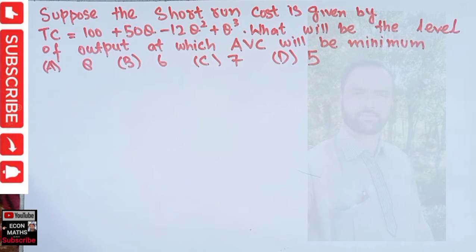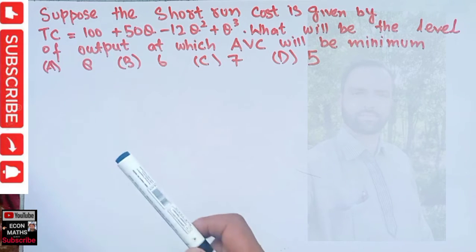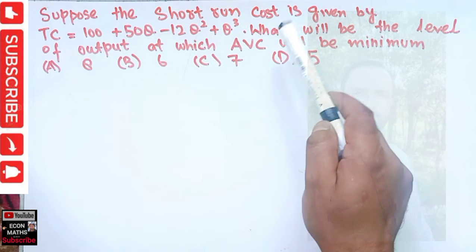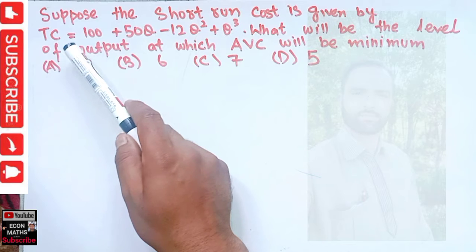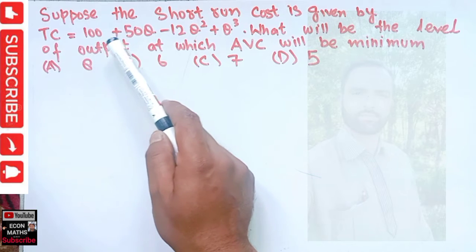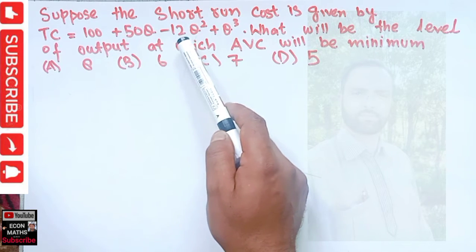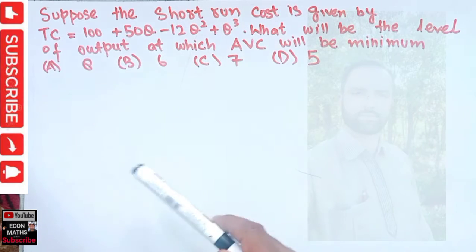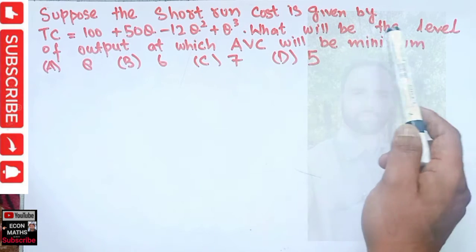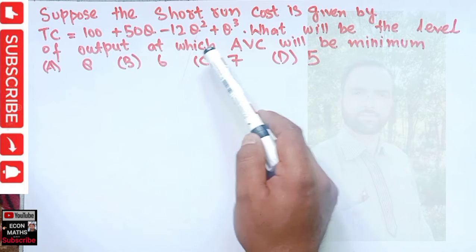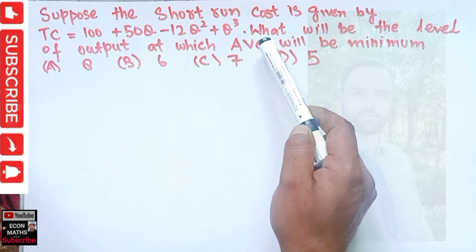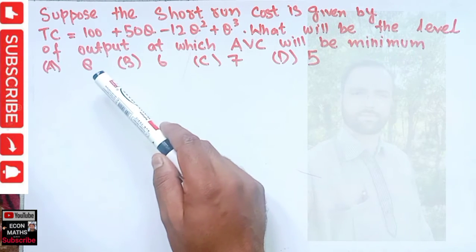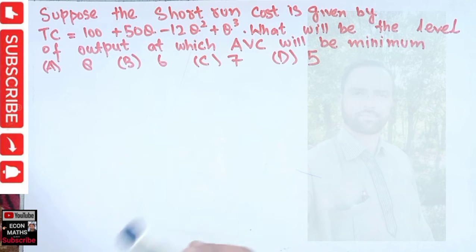In this video we will try to solve a numerical on finding the minimum average variable cost. The question is: suppose the short run cost is given by total cost equal to 100 plus 50q minus 12q squared plus q cubed. What will be the level of output at which average variable cost will be minimum? The options are 8, 6, 7, and 5.